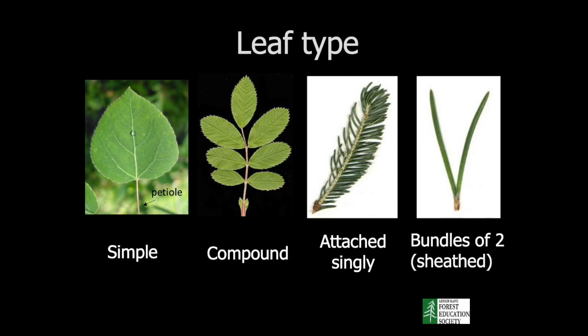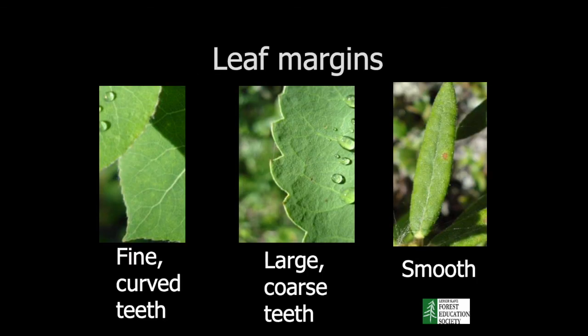When looking at broad-leaf trees, a variety of leaf margins can be found. For example, a leaf can have fine curved teeth, large coarse teeth, or it could have a smooth margin.